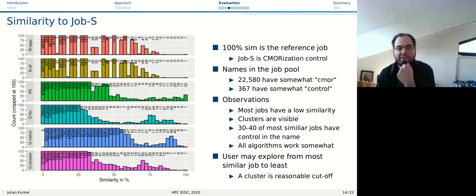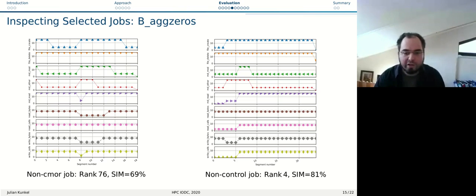We did some analysis and correlated them with the names in the job pool. Names are very bad because names can be set by the user, but they provide an indication. For job S, we have in our job pool of 600,000 jobs, 22,000 that are jobs called CMOR somewhat and 367 that are control. This job S is one of the CMORize control jobs. We find that 30 to 40 of the most similar 100 jobs have this name CMOR control in it. That means we are very effective in finding out of the 600,000 jobs similar jobs - we find 40 out of 400 in this haystack of 600,000 jobs, which is difficult.